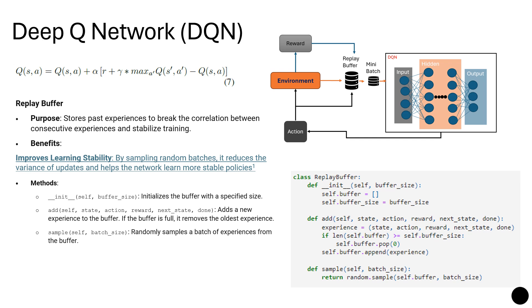For a simple replay buffer, we could have initialization. Here we're using Python to explain. So we initialize the buffer with a specified size, then we have a function to add the experience that contains the state, action, reward, next state, and the flag done. This flag is just to know when the episode has finished. Then we add a new experience to this buffer. When the buffer is full, we start removing the oldest experience.